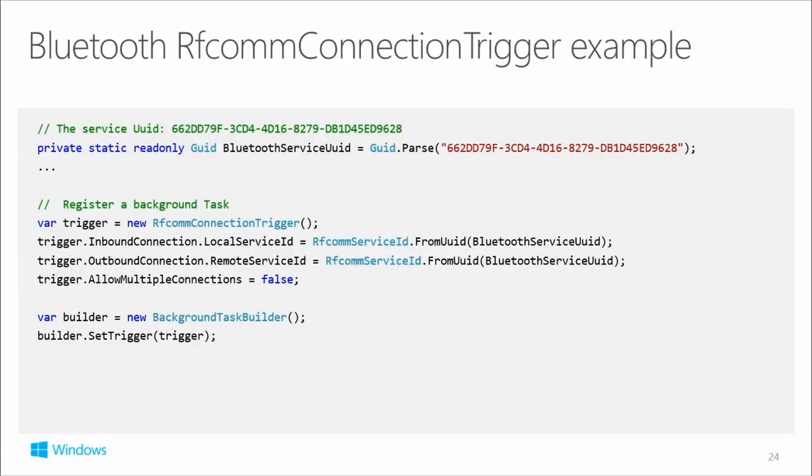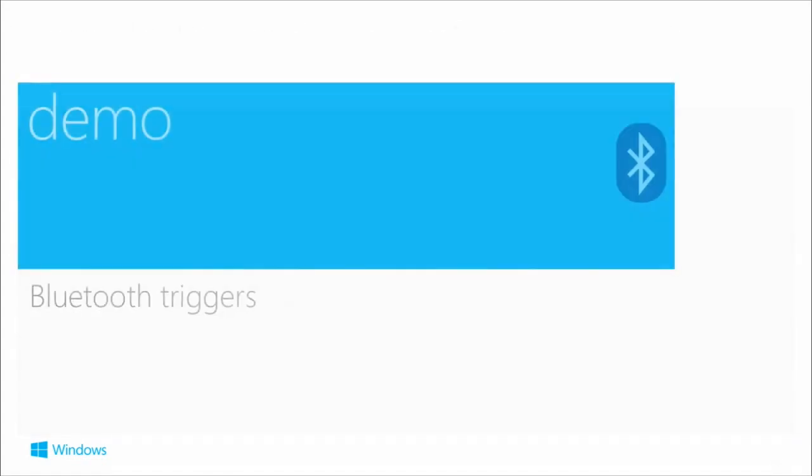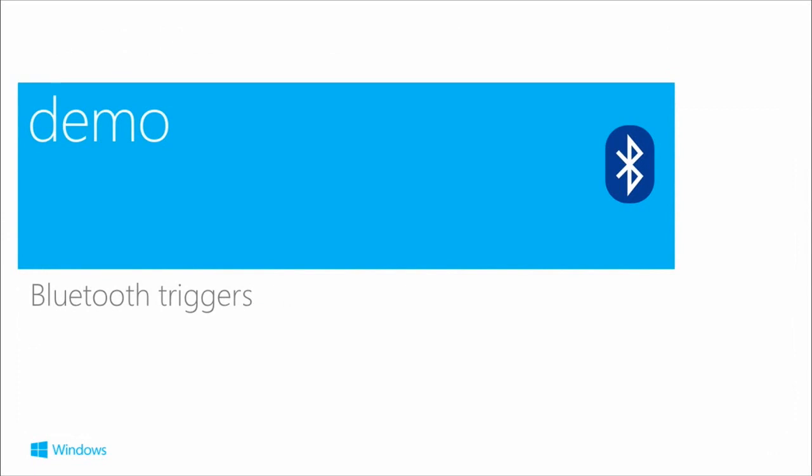This is how you do an RFComm connection trigger. You new up the device and then you need to have the Bluetooth service UUIDs - these are all fixed by the Bluetooth SIG. You then program up your RFComm connection trigger, and as with all the other background tasks, you have a background task builder, set the trigger to it, and now I'm going to show you a cool demo.